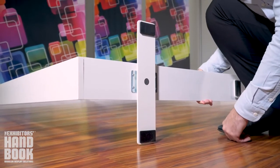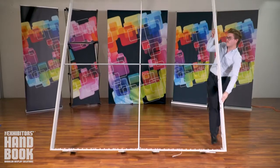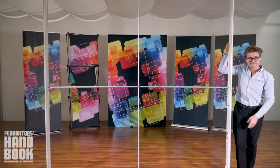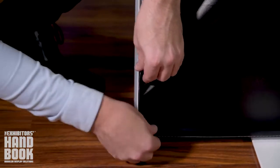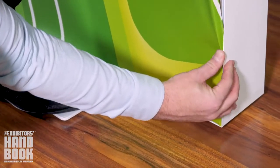When the crossbar is secure, swivel the legs upright and stand up the display. Once the display is up on its feet, take the graphic and insert the silicon attachment along the edge of the display.